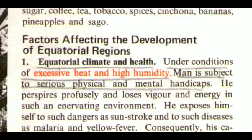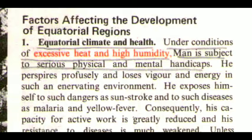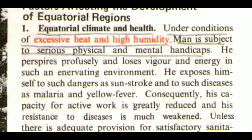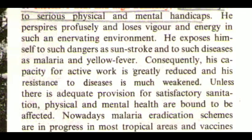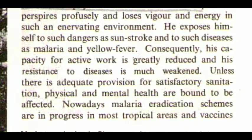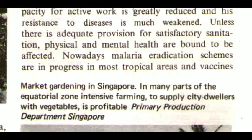The first factor affecting the development of equatorial regions is equatorial climate and health. Under conditions of excessive heat and high humidity, man is subject to serious physical and mental handicaps. He perspires profusely and loses vigor and energy. He exposes himself to dangers such as sunstroke and diseases like malaria and yellow fever. Consequently, his capacity for active work is greatly reduced and his resistance to diseases is much weakened. Unless there is adequate provision for sanitation, physical and mental health are bound to be affected. Nowadays, malaria eradication schemes are in progress in most tropical areas and vaccines have been developed to combat other diseases.